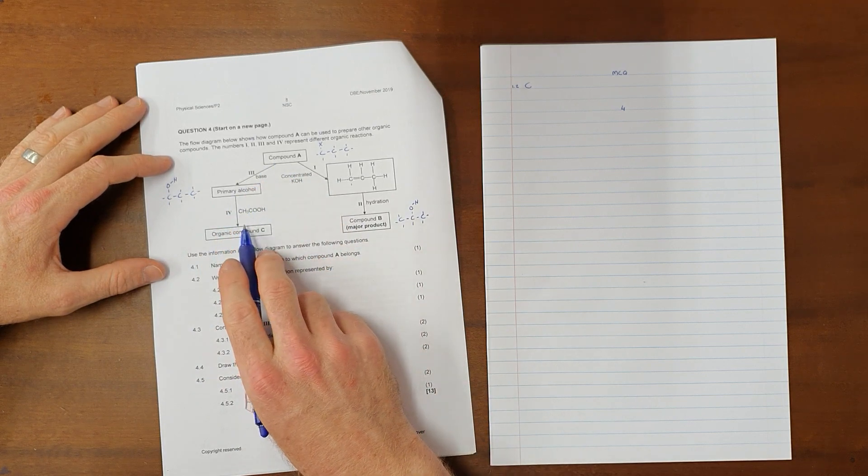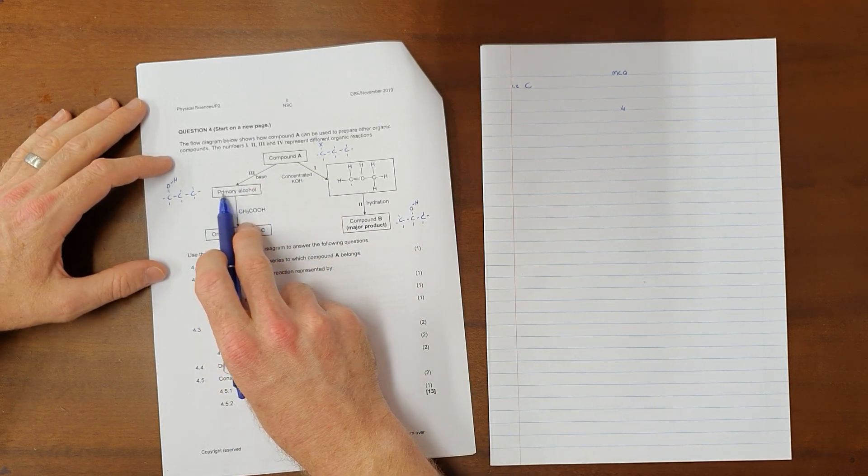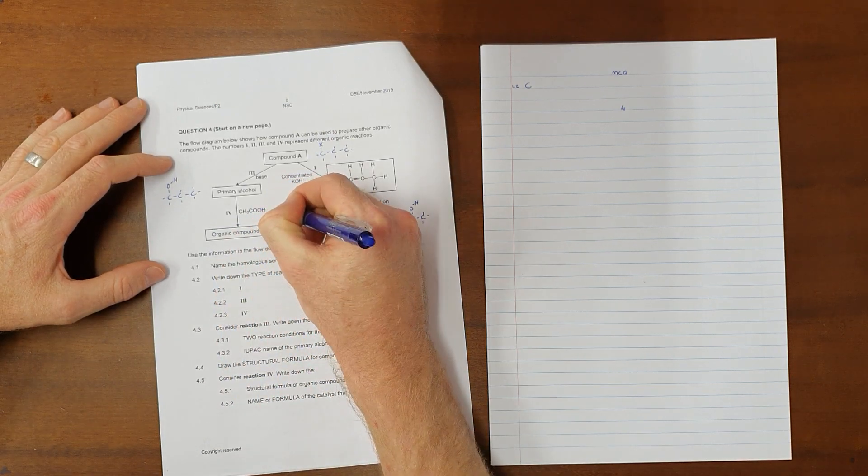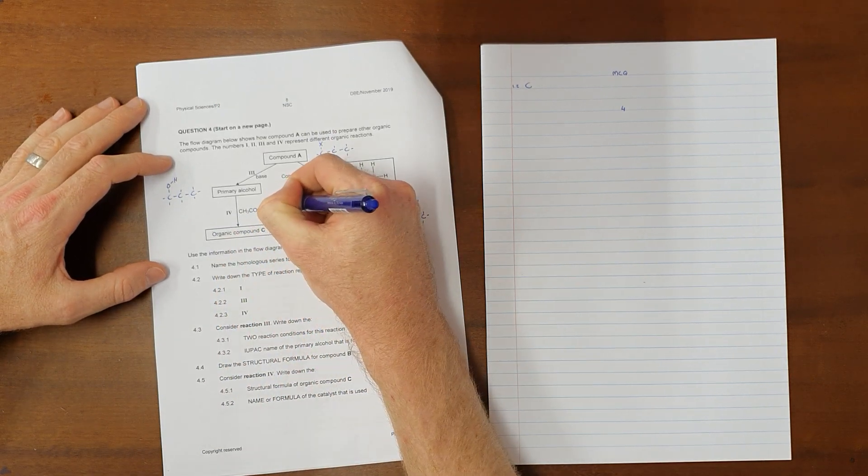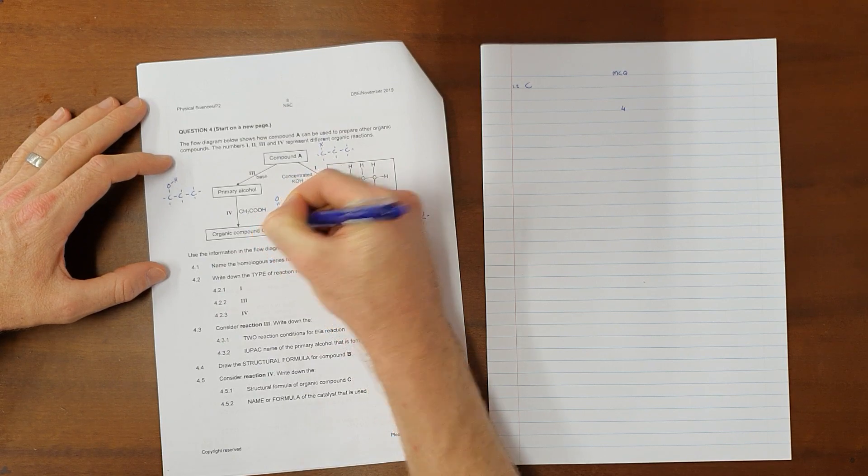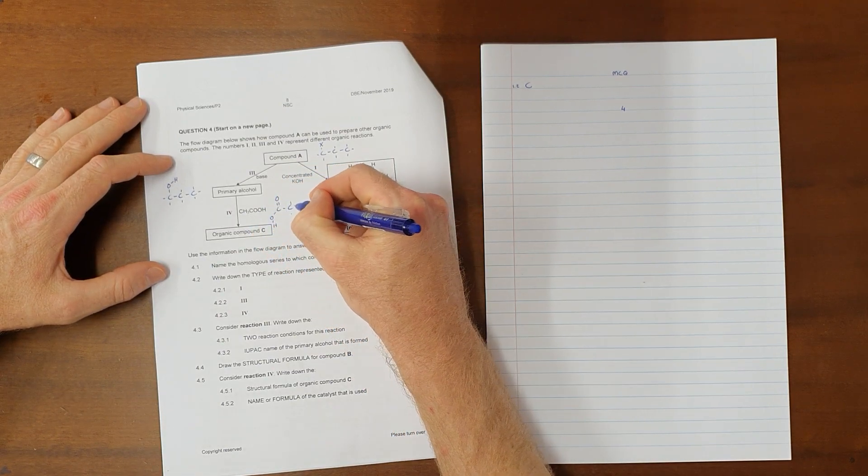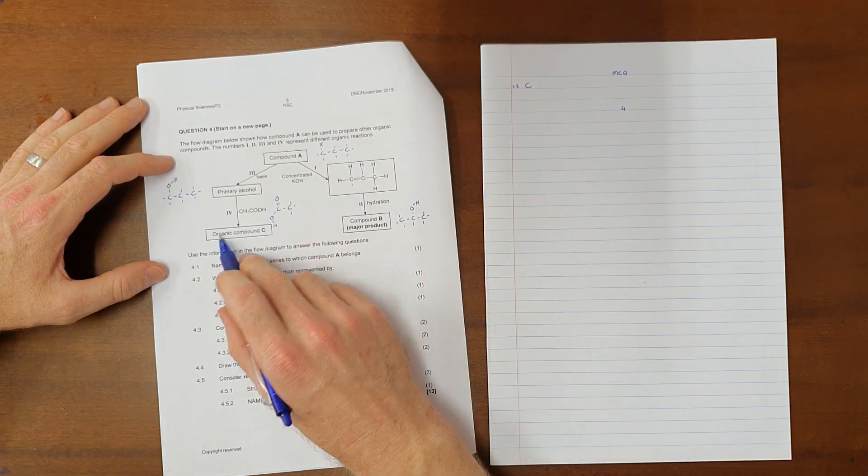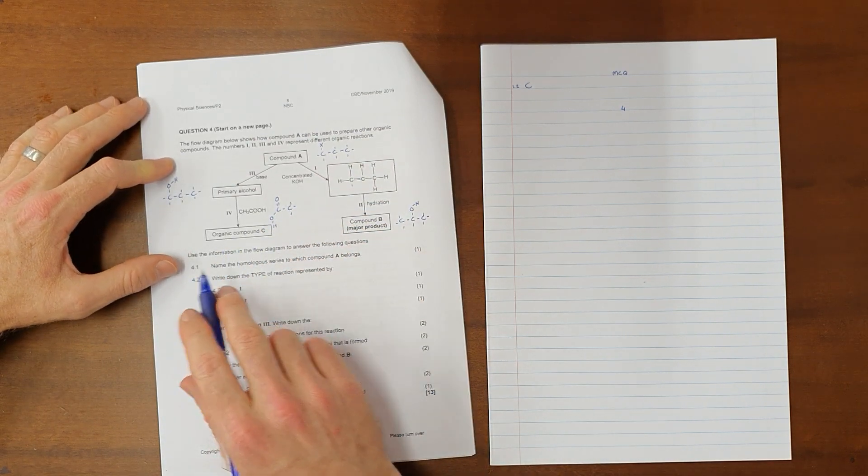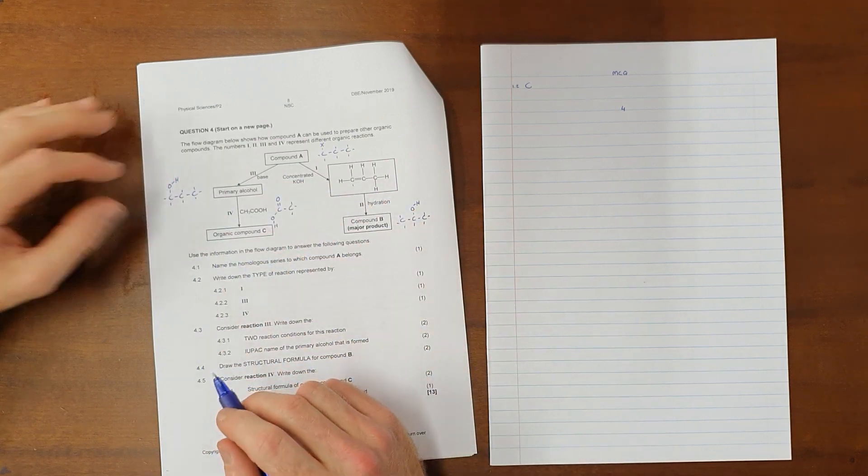What we can then see going down this side over here is that we have a reaction between a primary alcohol and what we can draw here to be sure, but what we can see is a carboxylic acid. And we know that as soon as an alcohol reacts with a carboxylic acid, we are going to form an ester. So now we can, once we have this understanding, it's easier to approach the questions.